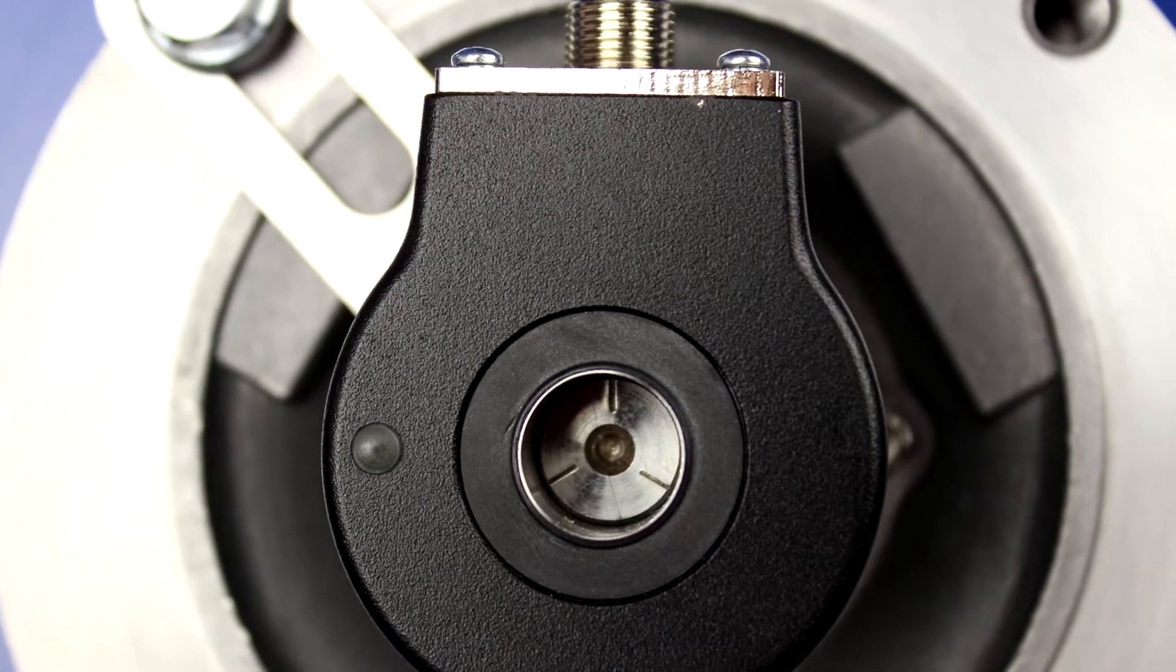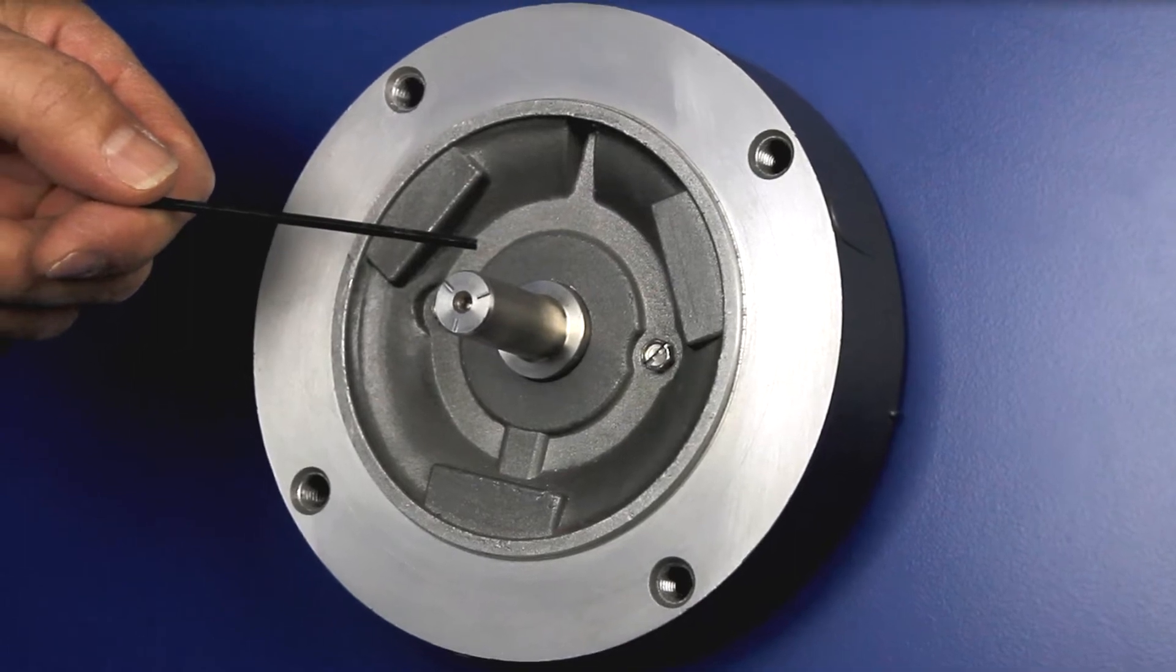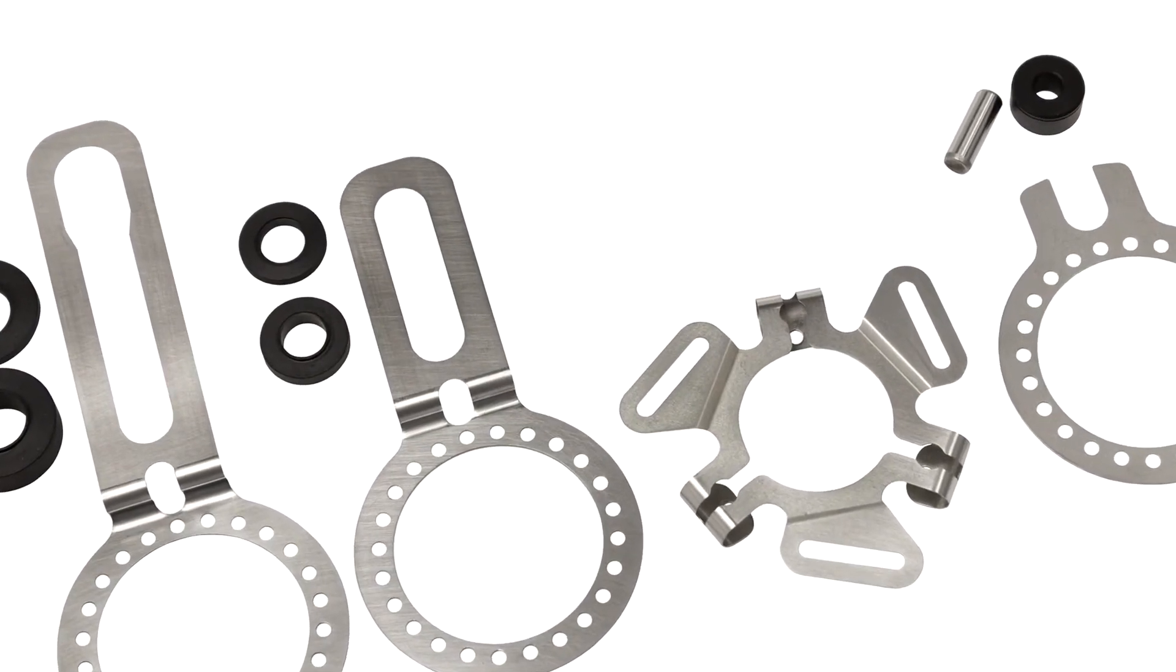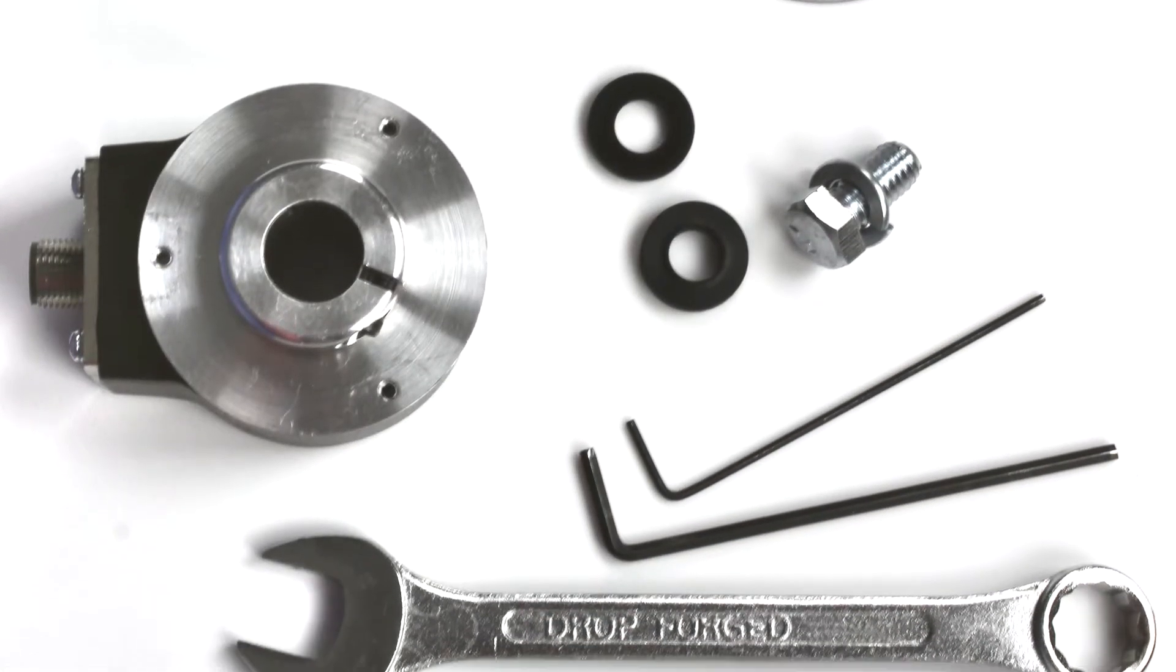First, confirm you have the hardware and tools needed to mount the encoder to the motor. This includes the appropriate flex arm and mounting screws, insulating washer, locking washer and mounting bolt, hex wrenches, and a wrench for the mounting bolt.